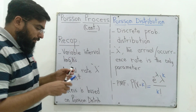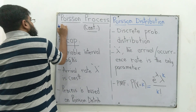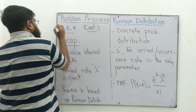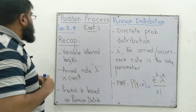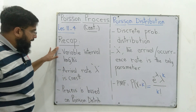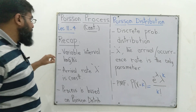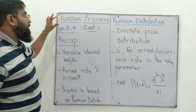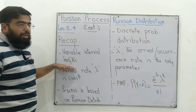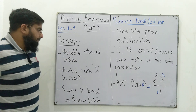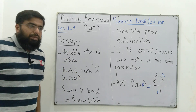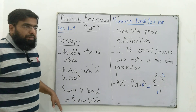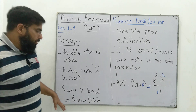We are studying Poisson process. This is lecture 11. For the recap of the last lecture: we studied that a Poisson process is a process where we have interval lengths variable but the arrival rate lambda is fixed — it's a constant. The process is based on the Poisson distribution.